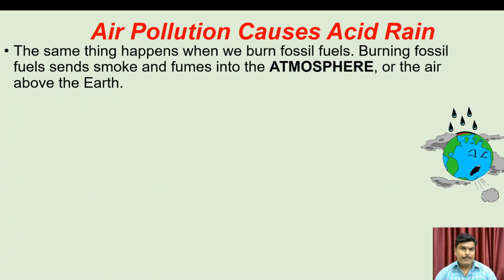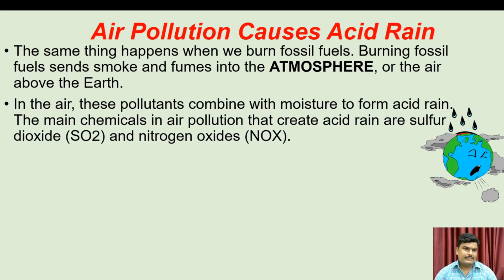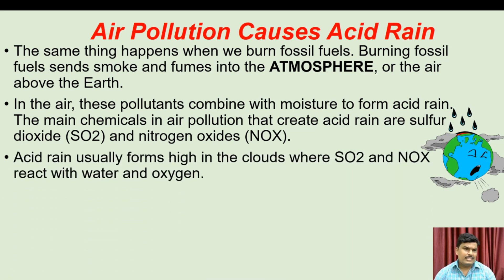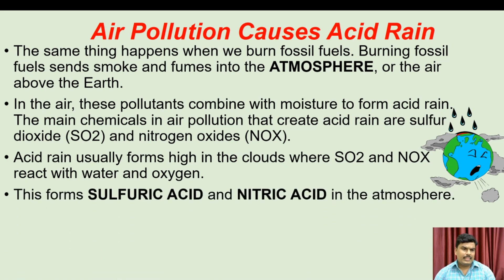The same thing happens when we burn fossil fuels. Burning fossil fuels sends smoke and fumes into the atmosphere — the air above the earth. In the air, these pollutants combine with moisture to form acid rain. The main chemicals in air pollution that create acid rain are sulfur dioxide and nitrogen oxide. Acid rain usually forms high in the clouds where sulfur dioxide and nitrogen oxide react with water and oxygen, forming sulfuric acid and nitric acid in the atmosphere.